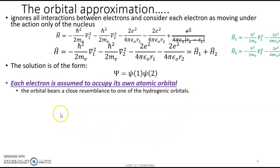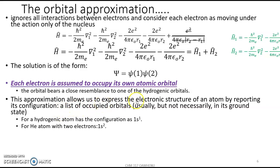The beautiful thing is that the orbital approximation allows us to express electronic structure of atoms by reporting its electronic configuration. An electron one can occupy this orbital, electron two can occupy that orbital. For the hydrogenic system, we can report it as 1s1. For the helium atom with two electrons, we can report this as 1s2.